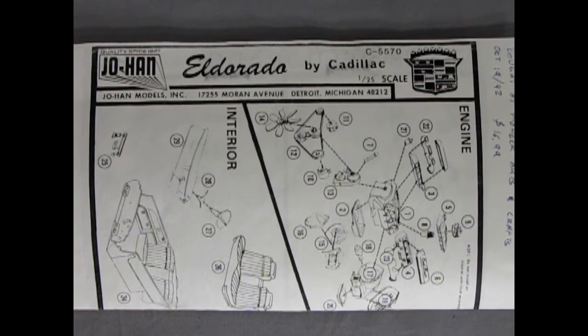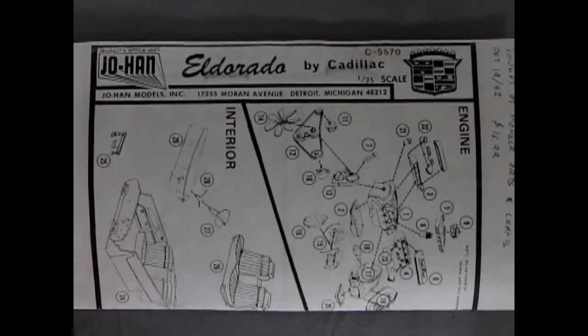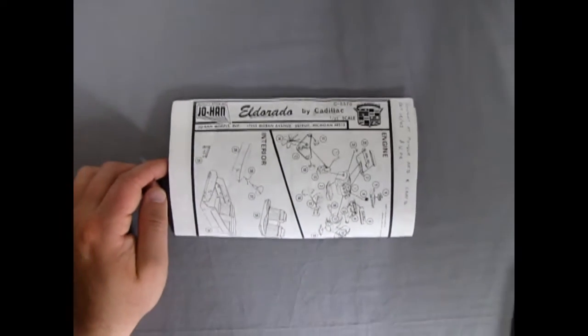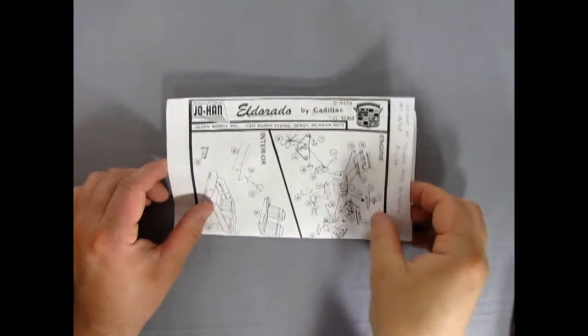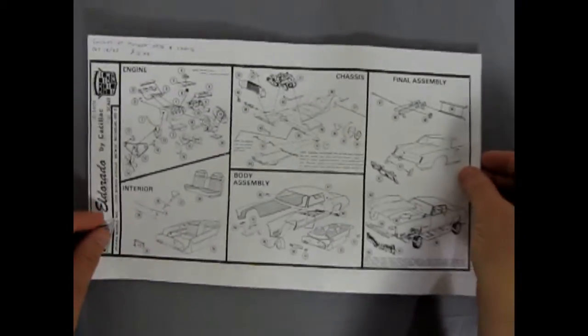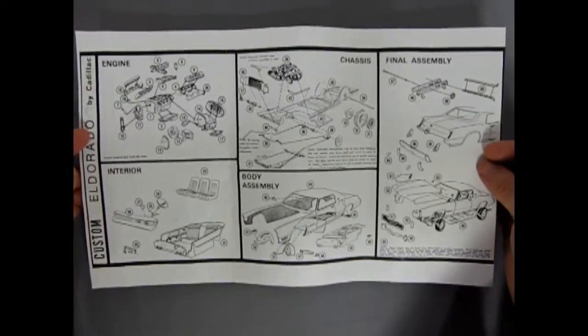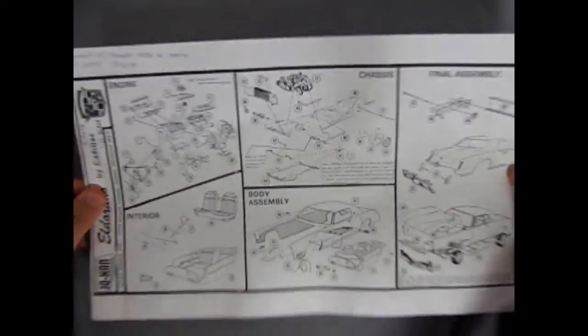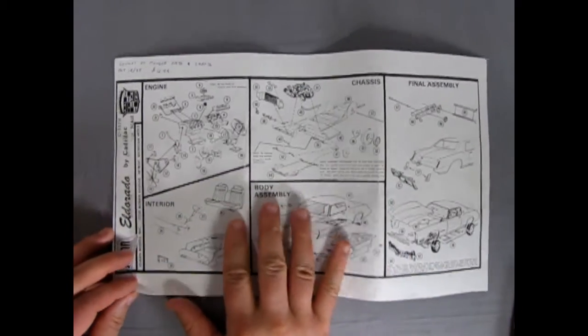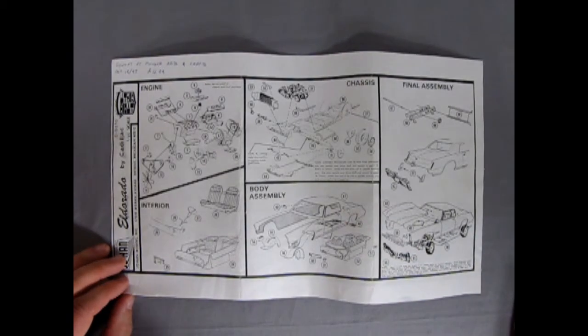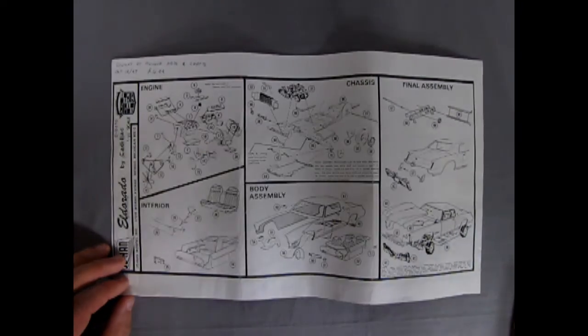And here we have our instruction sheet for our 1970 Cadillac Eldorado. And Johan. Here, I'll just zoom back a little bit. There we go. Johan usually had a one-sheet instruction set. But they would print it on both sides, as we can see here. So what we'll do is we'll go through panel by panel and see what each of the little illustrations are.